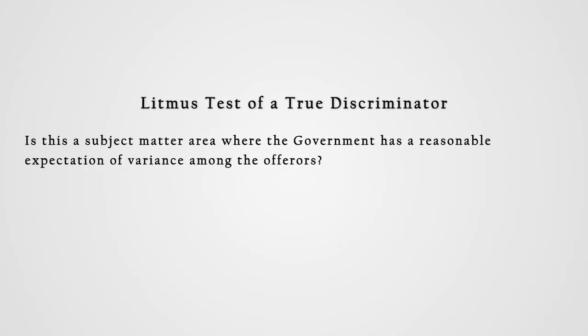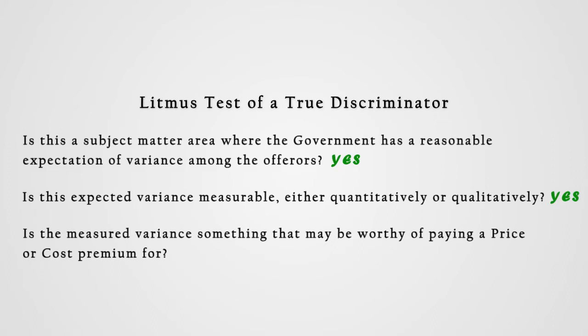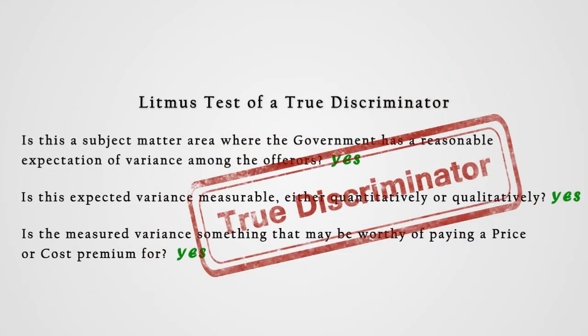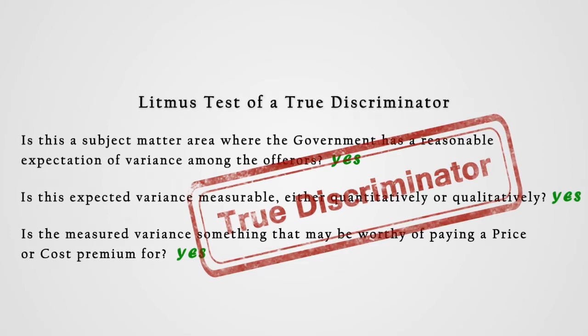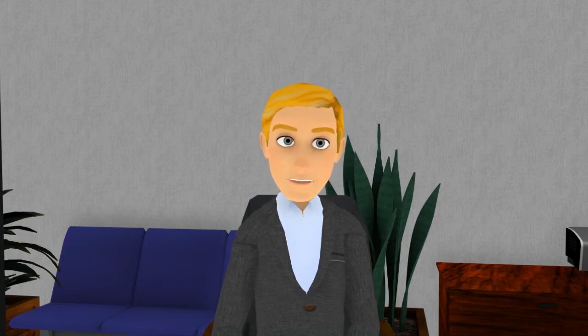I think a good litmus test of a true discriminator is to ask three questions. First, is this a subject matter area where the government has a reasonable expectation of variance among the offerors? If the answer is yes, is the expected variance measurable either quantitatively or qualitatively? If the answer here is also yes, is the measured variance something that may be worthy of paying a price or cost premium for? If you can answer yes to all three questions, you probably have a pretty good discriminator to use as an evaluation factor. Those three questions can facilitate a really good discussion of what evaluation factors will work best for a particular acquisition.